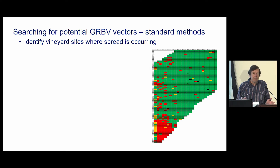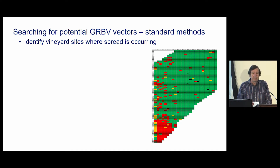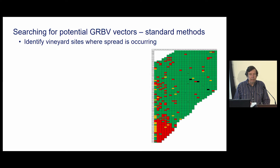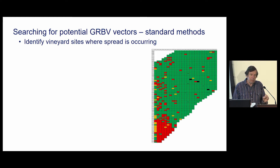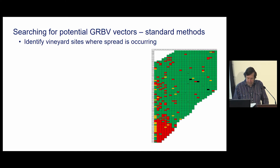We weren't sure that red blotch was spreading — a lot of the people that had been working on red blotch weren't sure. However, we started seeing certain patterns that would indicate a spread of red blotch. We also had some experience looking at specific vineyards where we were able to map the vineyards and see from year to year that the number of red blotch infested vines were increasing.